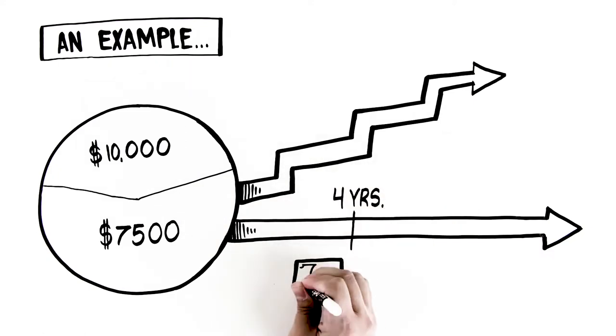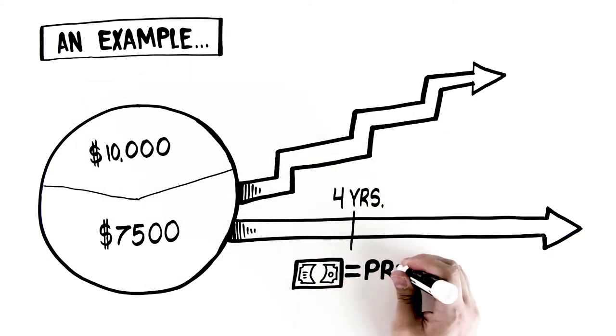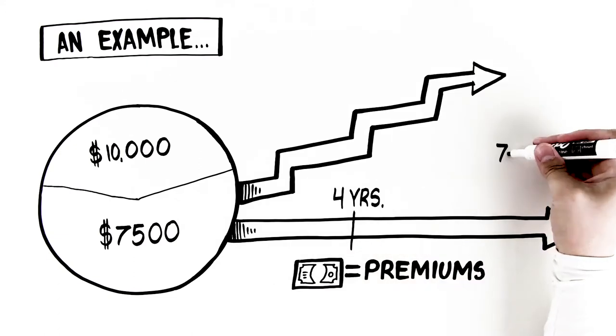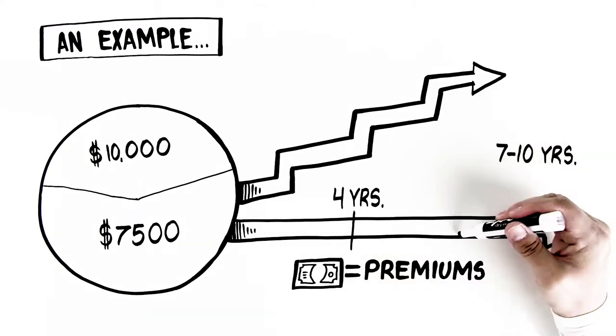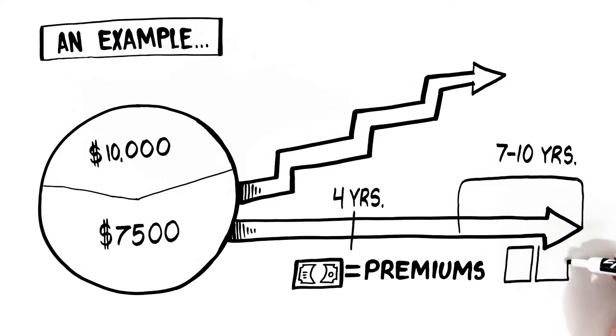Around year 4, the cash value increases by the same amount as your premium, and between years 7 to 10, the cash value of your policy will equal the amount of premiums you've paid in, making this a break-even point.